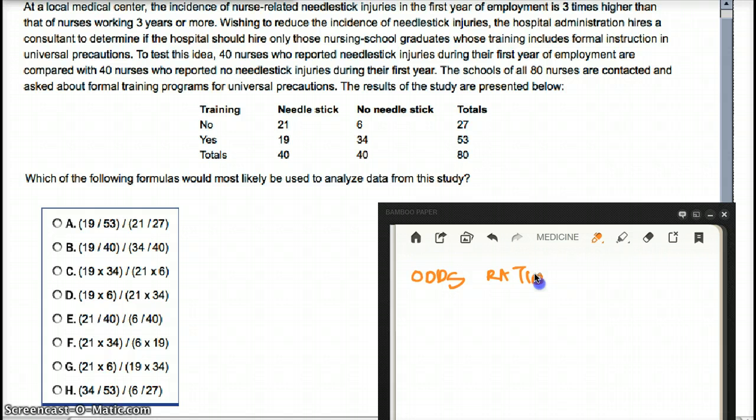If this was a prospective study, we would have used a relative risk. So as soon as I realized that this is a retrospective study, the only way we can analyze data is going to be by odds ratio. And that's the only thing we can do.